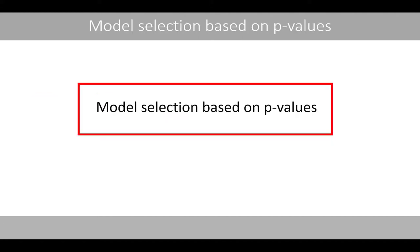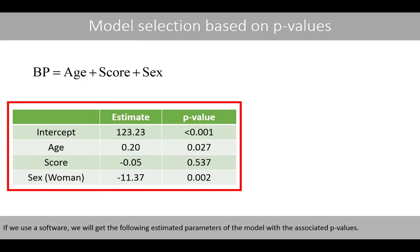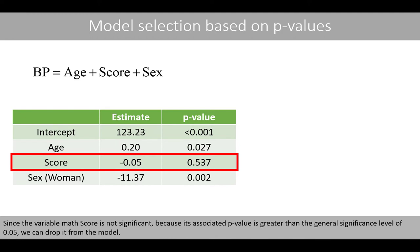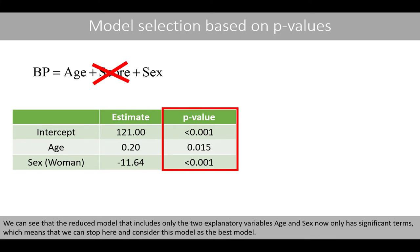We now start with model selection based on p-values. If we use the software, we will get the following estimated parameters of the model with associated p-values. Since the variable math score is not significant — because its associated p-value is greater than a general significance level of 0.05 — we can drop it from the model. We can see that the reduced model that includes only the two explanatory variables age and sex now only has significant terms, which means that we can stop here and consider this model as the best model.